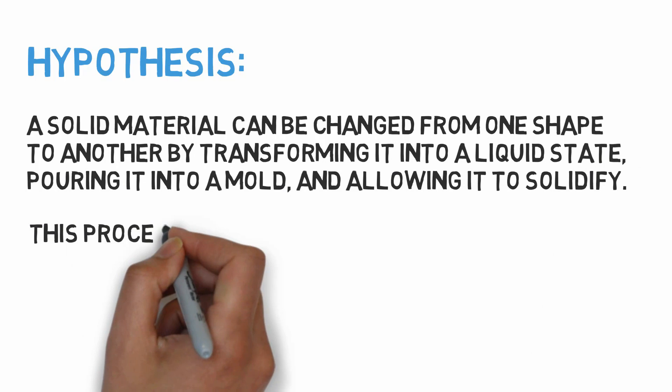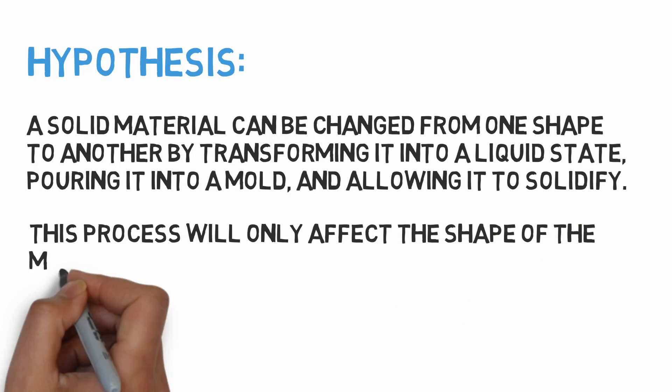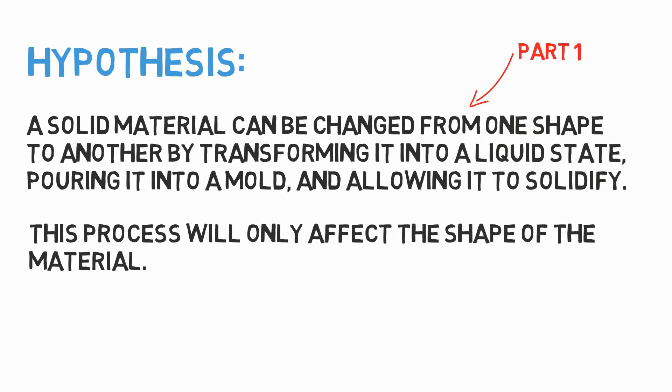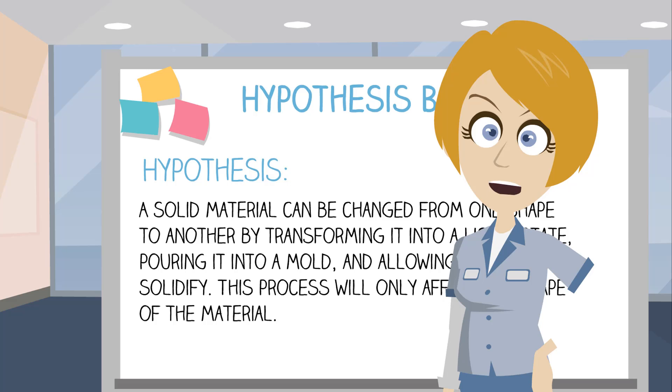This process will only affect the shape of the material. As you can see, this hypothesis has two parts: that we can change the shape of the material, and that it changes only the shape. We'll need to be aware of this when designing our experiment, since we will want to look at both parts of this hypothesis.